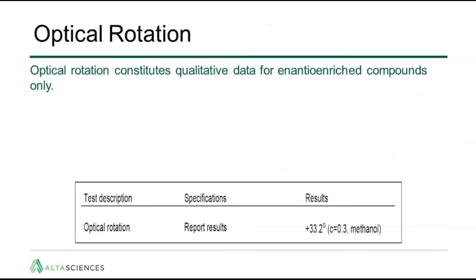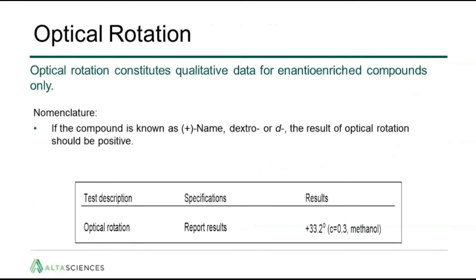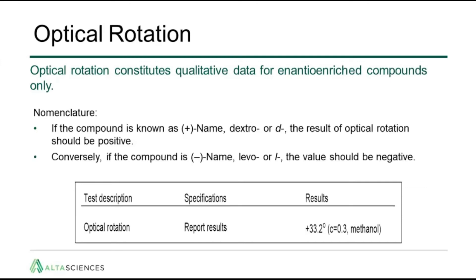The optical rotation is qualitative data for enantio-enriched compounds only. For the nomenclature, if the compound is known as plus, dextro, or lowercase d, the result of optical rotation should be positive. Conversely, if the compound is minus, levo, or lowercase l, the value should be negative. The absolute value itself depends on the concentration and the solvent used, which is why it's usually reported with those conditions specified, as shown in the example.